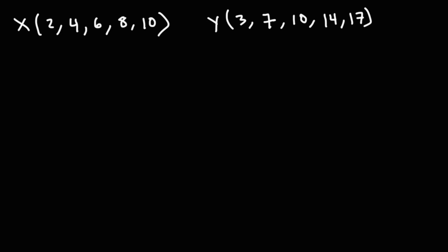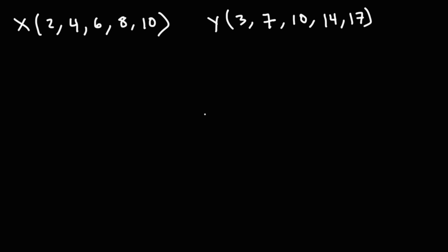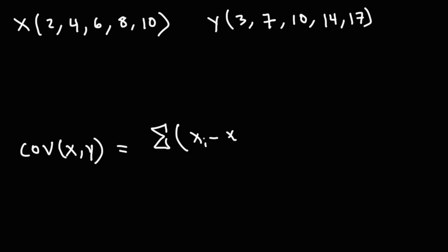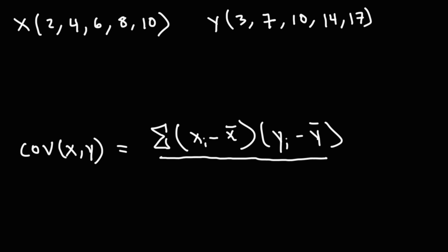In this lesson, we're going to talk about how to calculate the covariance between two variables. The equation you need is: the covariance between variables x and y is the sum of the products of the differences in the x values with the mean of x, times the differences of all the y values with the average y value. This is divided by n minus 1 when calculating the sample covariance, or simply n for the population variance. For this video, we're going to calculate the sample covariance.